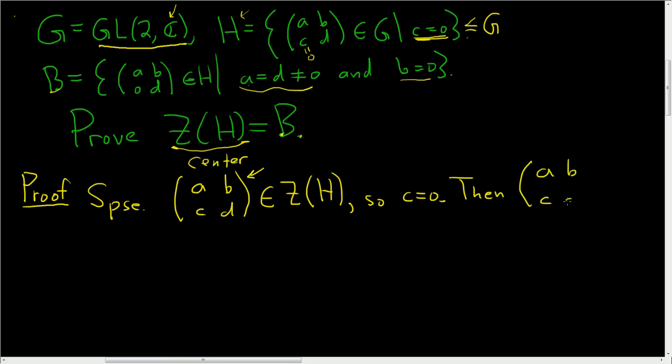(a, b, c, d) is actually equal to (a, b; 0, d). Now the hard part: we have to show that our matrix is in B, so we have to show that a equals d, it's not equal to 0, and b equals 0. First, let's show that a and d are not equal to 0.